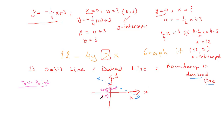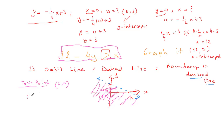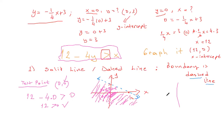The test point is (0, 0) — the origin. If I shade this region and (0, 0) is in it, then it must satisfy the original inequality: 12 minus 4 times y greater than or equal to x. Substituting (0, 0): 12 minus 0 greater than or equal to 0, so 12 greater than 0. Is that true? Yes, it's true! That means we are shading the correct region.